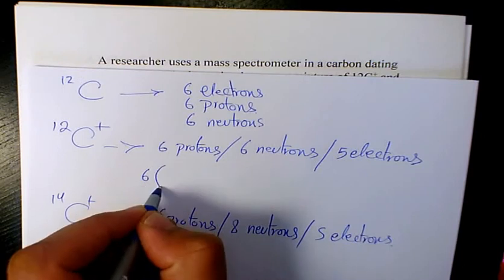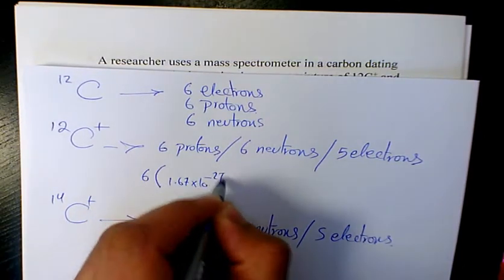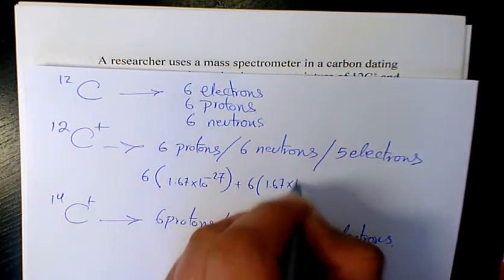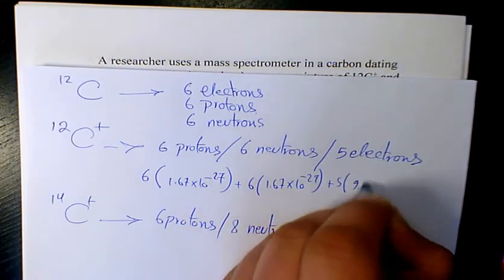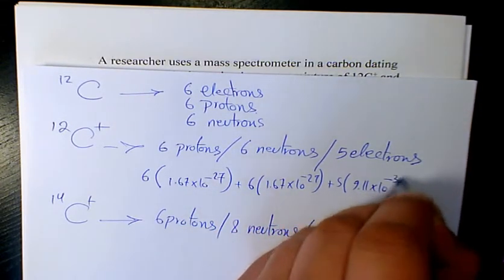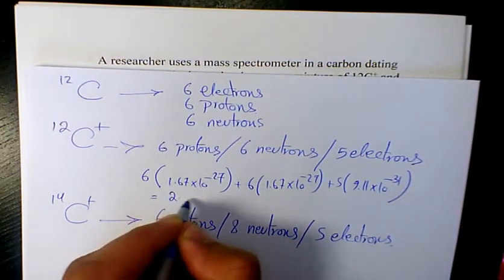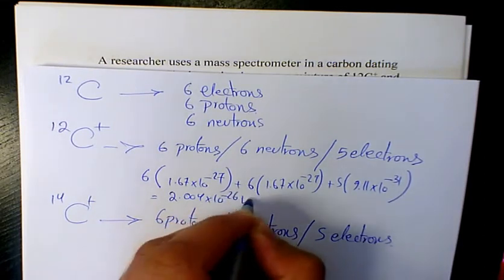The mass of a proton is 1.67 × 10^-27 kg, the neutron mass is the same, and the electron mass is 9.11 × 10^-31 kg. For C12+, this gives a mass of 2.004 × 10^-26 kg.